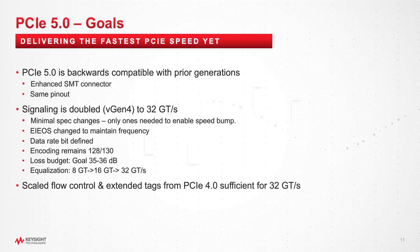Backward compatibility is key. We agreed and worked towards getting the signaling rate doubled versus Gen 4 to 32 gigabits per second, and really minimal spec changes — only those things that were needed to enable that speed bump.